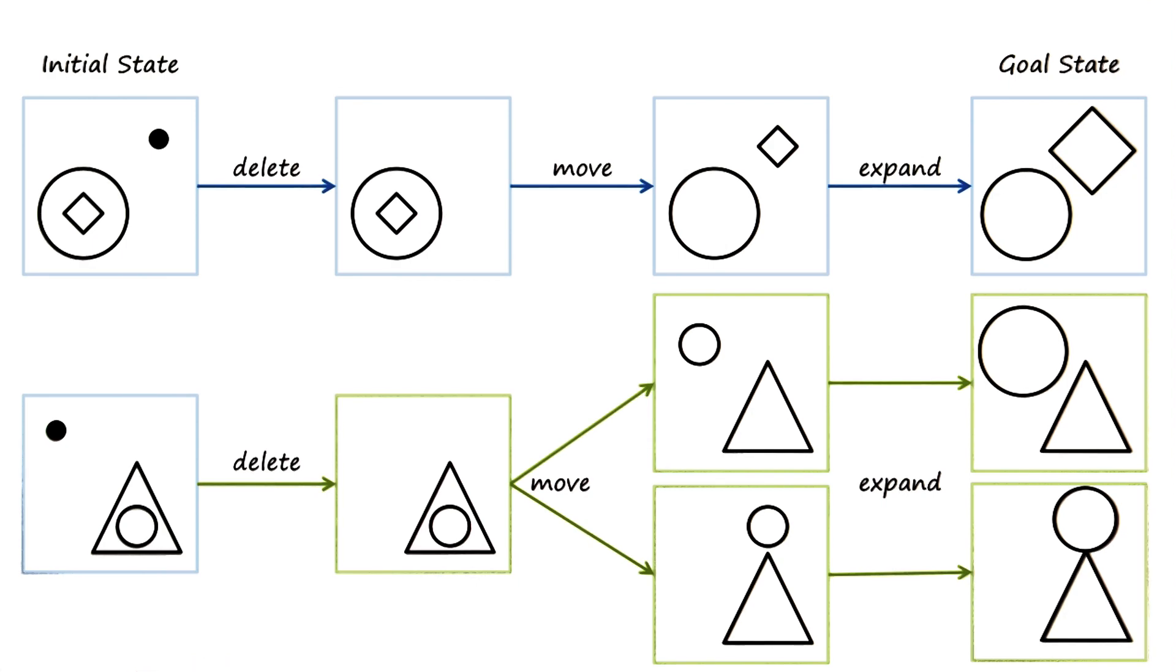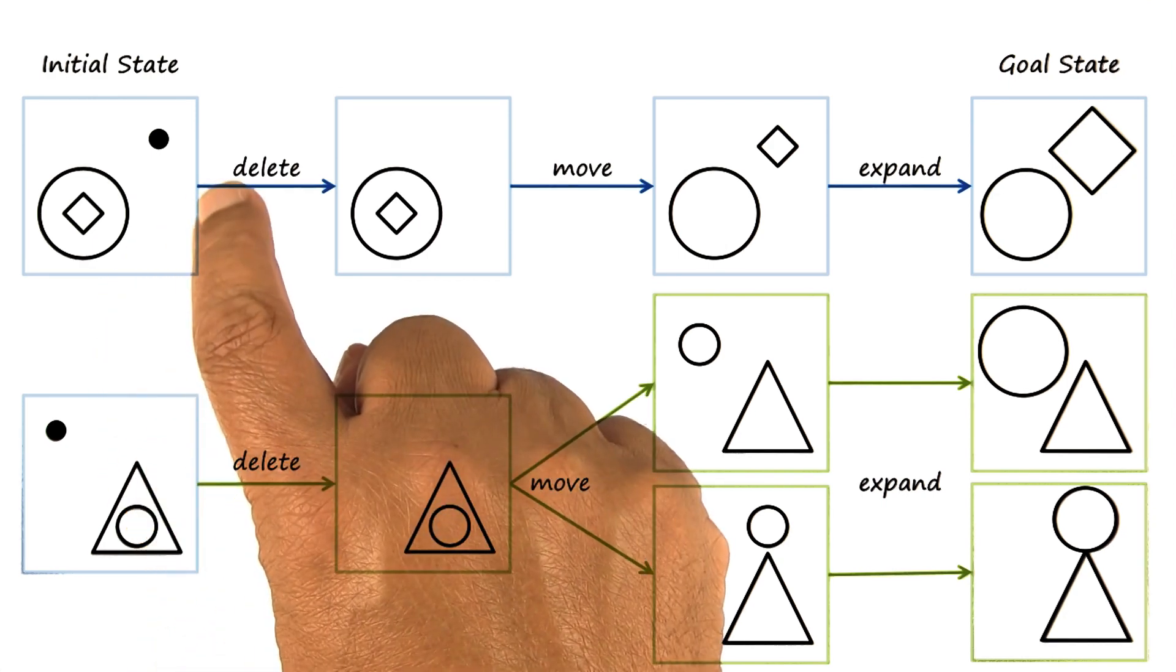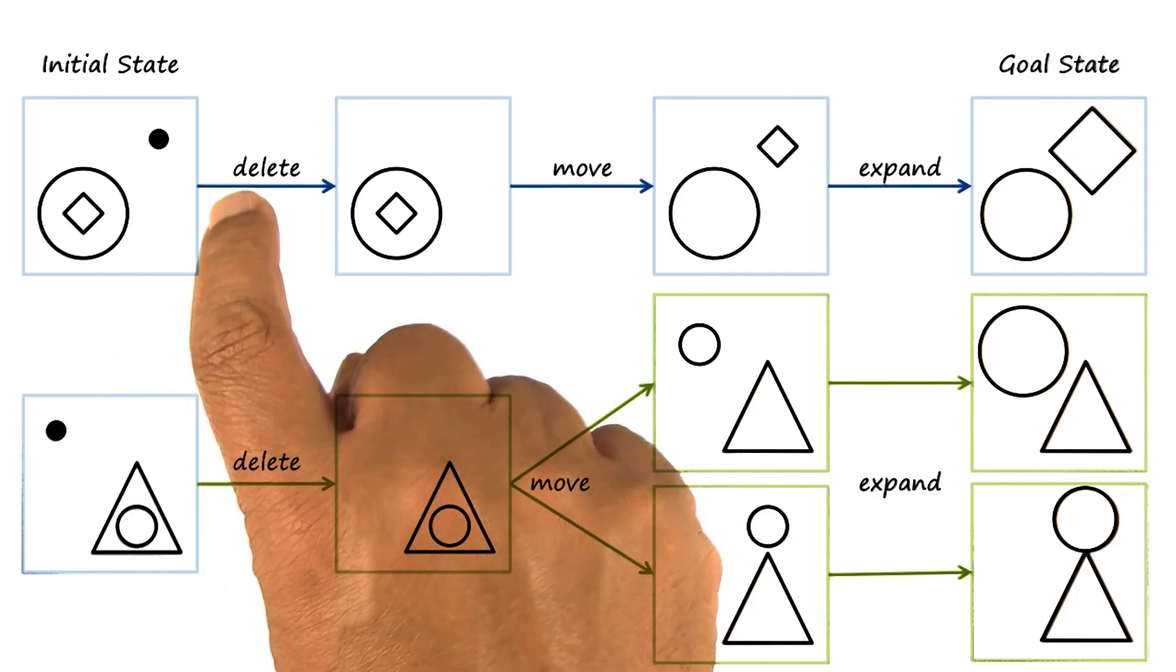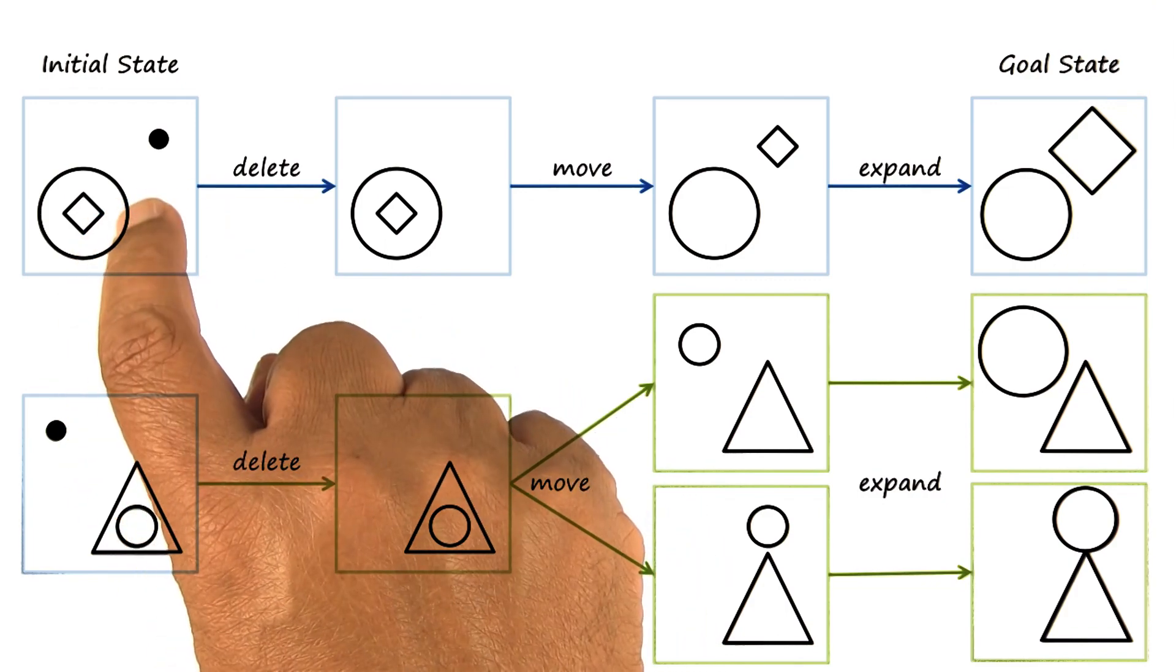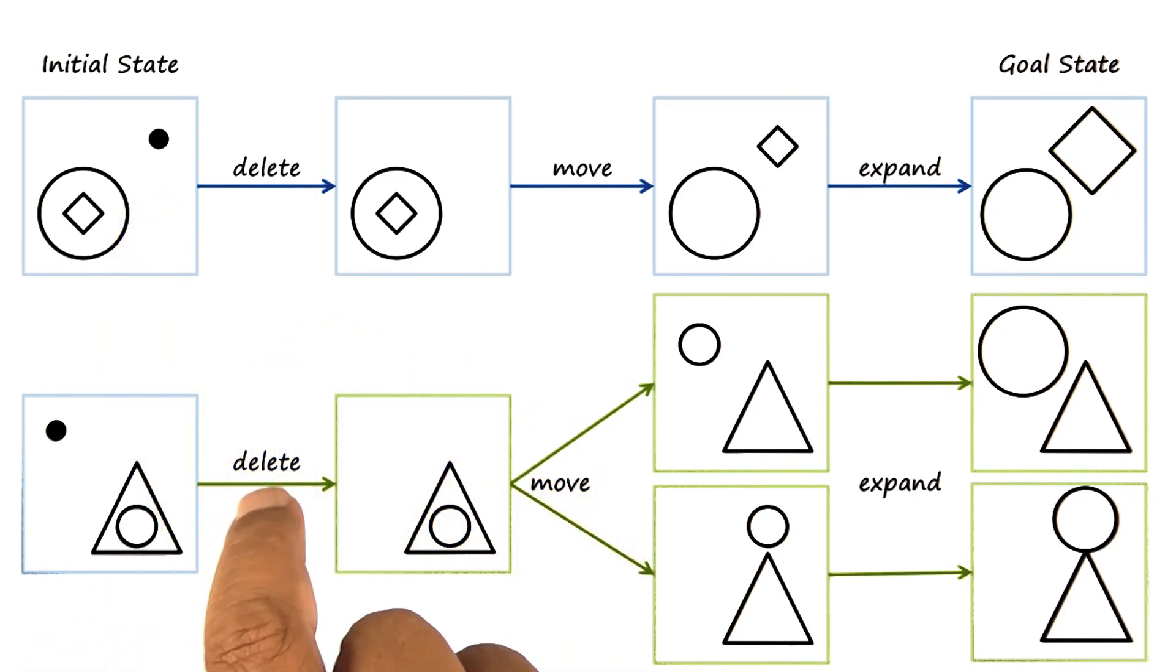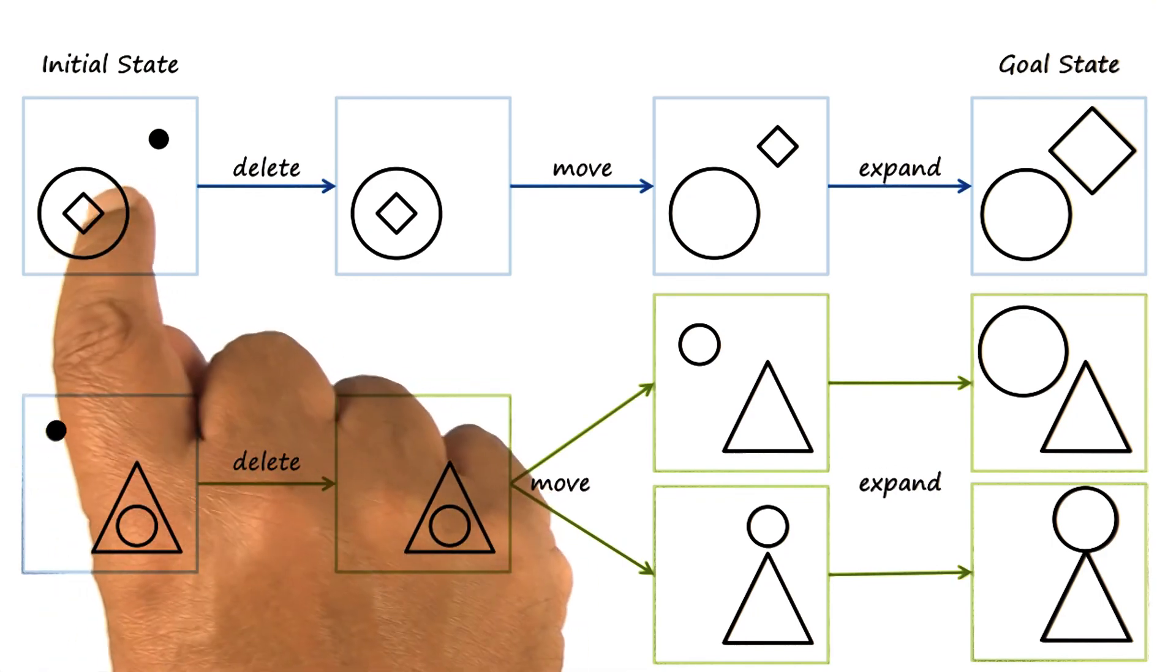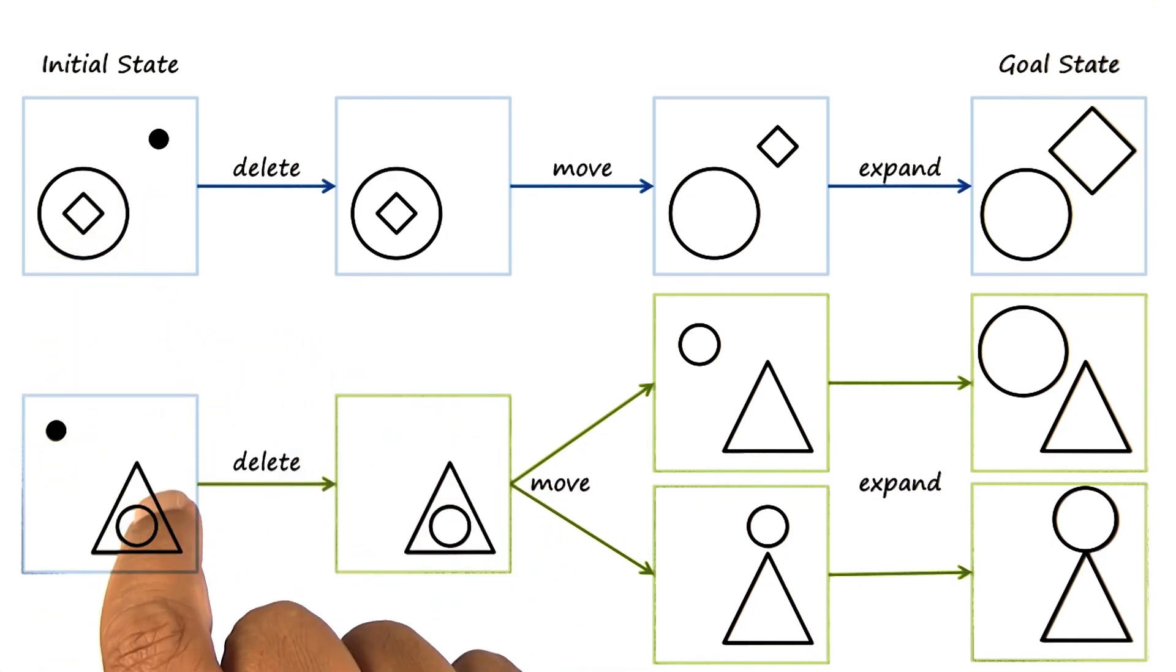here is a partial answer. Remember that we had a semantic network representation of the image A. And in that representation, we said that the diamond is inside the circle. Now we also have a semantic network representation of image C. And that semantic network representation says that the circle is inside the triangle. It is that inside relationship that hints that this circle must correspond to the diamond. Because here, the diamond is inside, and here the circle is inside.